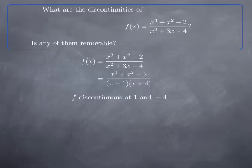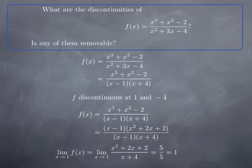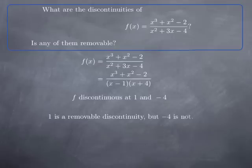On the other hand, if we look at what happens at x = 1, plugging x = 1 into the numerator gives 1 + 1 - 2 = 0. So (x - 1) is a factor of the numerator. Factoring and canceling (x - 1), we obtain (x² + 2x + 2) / (x + 4). This is a rational function with 1 in its domain, so we plug in x = 1 to get 5/5 = 1. Therefore the limit of f at 1 exists, and 1 is a removable discontinuity.